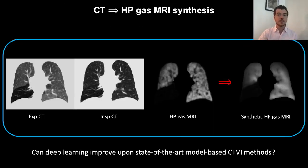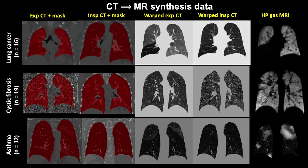Recent advances by Dr. Tahir and colleagues have shown that these CT ventilation models moderately correlate with hyperpolarised gas MRI. In this study we assess whether deep learning based methods can significantly improve upon state-of-the-art CTVI methods. The dataset comprised of paired inspiratory and expiratory CT and hyperpolarised helium-3 gas MRI for 47 patients with either lung cancer, cystic fibrosis or asthma. Inspiratory and expiratory CT scans were aligned using deformable image registration and subsequently registered to the spatial domain of helium-3 MRI. CT-based surrogate ventilation images were computed using the Hounsfield unit change, or CTHU, model-based metric.